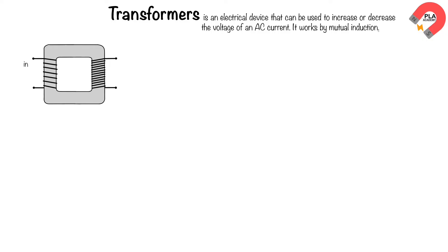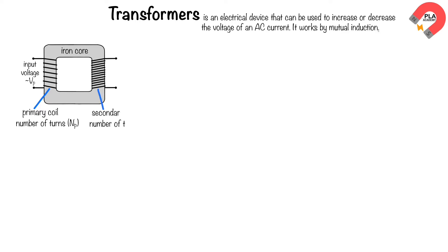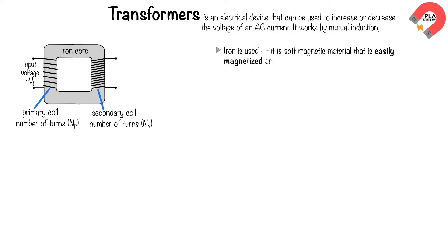The four main components are: the AC input power supply, primary coil, iron core, and secondary coil. Iron is used because it is a soft magnetic material that is easily magnetized and demagnetized.